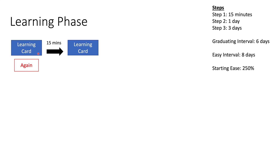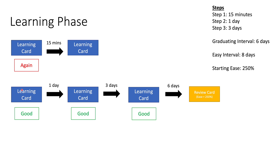Now pretend this card is not that hard and you actually know it — so you hit Good. Whenever you hit Good in the learning phase, you move on to the next step. So instead of step one, we move on to step two, meaning instead of waiting 15 minutes, we're going to wait one day before we see the card again. You see the card for the very first time, you hit Good, and one day later you'll see the card again. It's still a learning card.